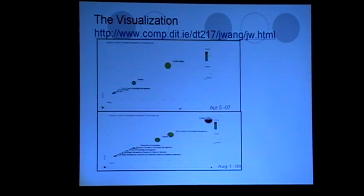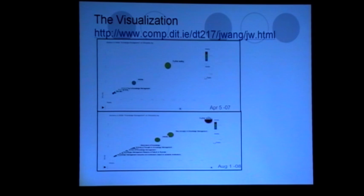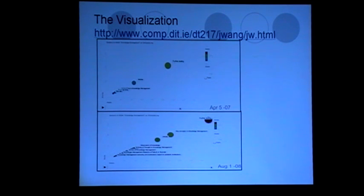The tool that has been created as part of this research is available at http://www.comp.dit.ie/dt217/jwang/jw.html. What you're seeing on the screen is two snapshots of the same article on knowledge management. The bubbles represent different word content, different sections, the articles, different things. This will be explained in a lot more detail in part two of this presentation.